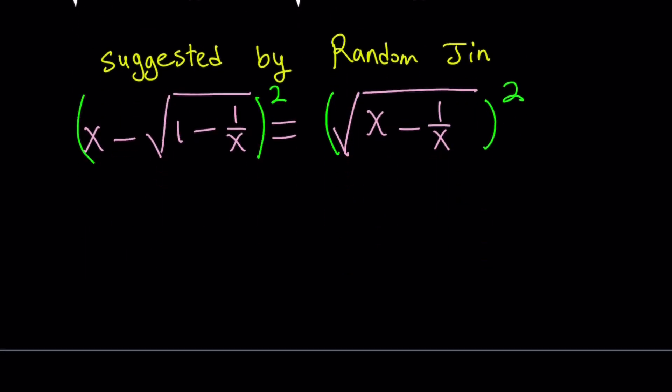This is going to be like a minus b quantity squared. So x squared minus 2x times the radical plus, if you square that square rooted expression, you're going to get what's inside: 1 minus 1 over x. And on the right hand side, you're going to get x minus 1 over x.